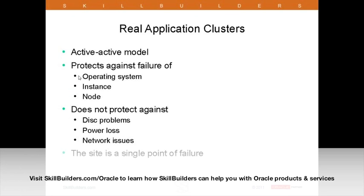Beginning with RAC — it's an active-active model, meaning multiple instances on multiple machines both doing work. It protects you against many single points of failure that affect individual single-instance environments. You can lose an operating system due to a bug, lose an instance with a crash that brings down the node, or lose a node for reasons like power cuts. What it doesn't protect you against is problems with the one database, power loss, or network issues. Most importantly, the site is a single point of failure.